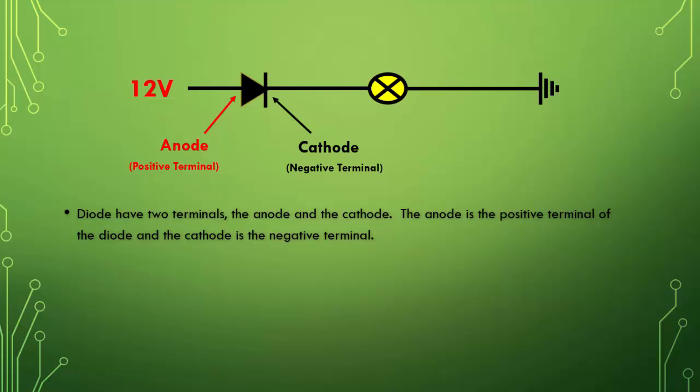Just remember, the anode is the positive side, and the cathode is the negative side.